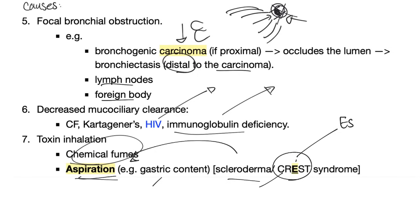Let's review CREST: C stands for calcinosis and anti-centromere antibody; R for Raynaud's phenomenon; E for esophageal dysmotility; S for sclerodactyly; and T for telangiectasis.